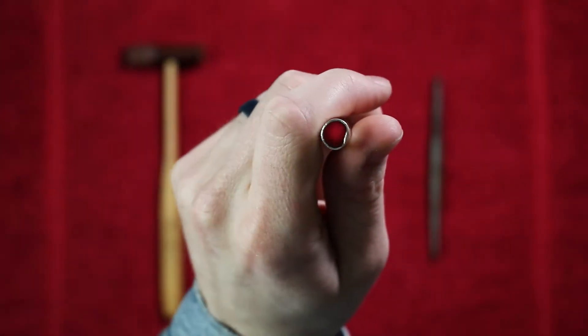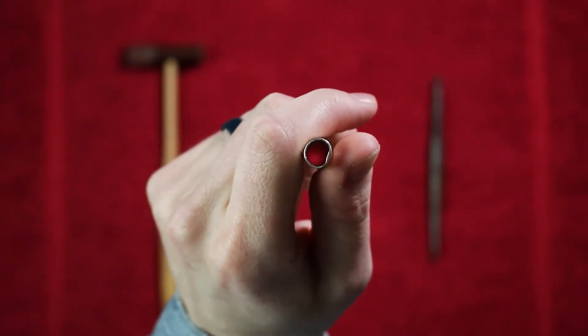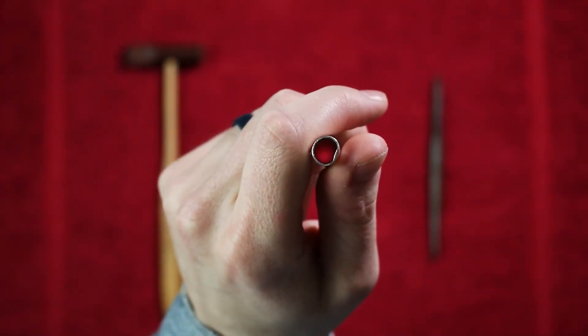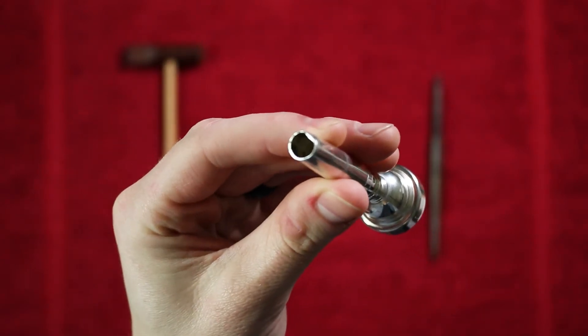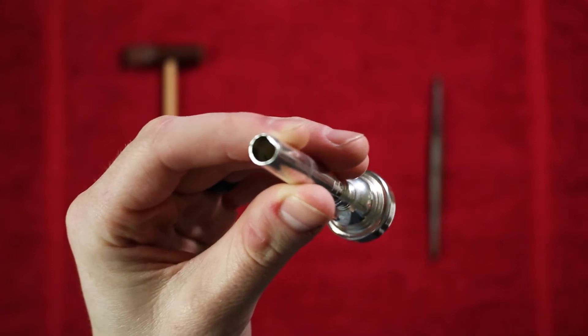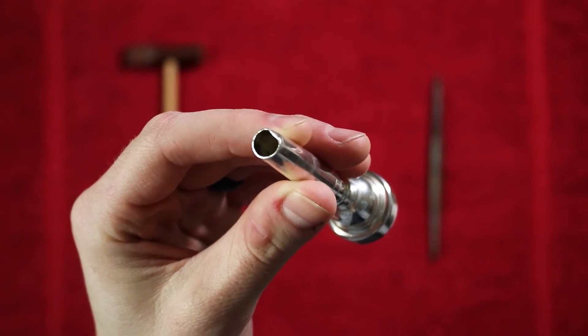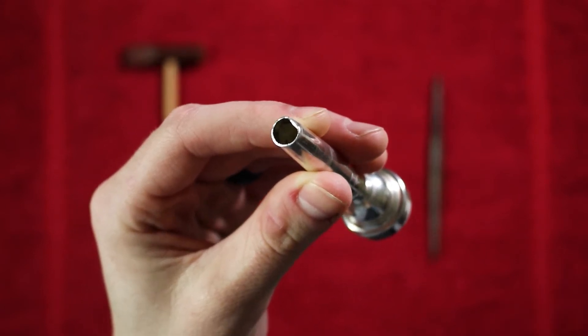We all know that accidents happen and somehow or another dents and dings can show up on your mouthpiece. This can cause several different problems by leaking air and changing the resistance and feel of the mouthpiece. The process used to fix this is commonly referred to as truing and is fairly easy to do with some practice.